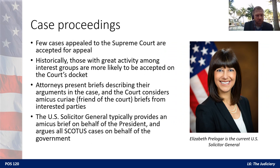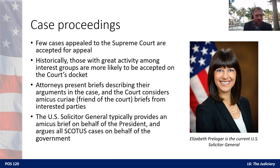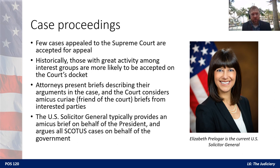Historically, most of the cases appealed to the Supreme Court don't actually get accepted for hearing. Cases with great activity among interest groups — if it's getting a lot of attention or seen as particularly important — are more likely to be taken on by the court, because the justices want to rule on matters that are important to everyday people. Attorneys present briefs describing their arguments in the case, similar to the appellate system. The court will also consider what are known as amicus curiae briefs — Latin for 'friend of the court.' The Dobbs case from this summer that looked at abortion had an extensive number of amicus curiae briefs from all different sources — both pro-choice and anti-abortion sides submitted considerable briefs, though the extent to which they actually influence judges is up for debate.